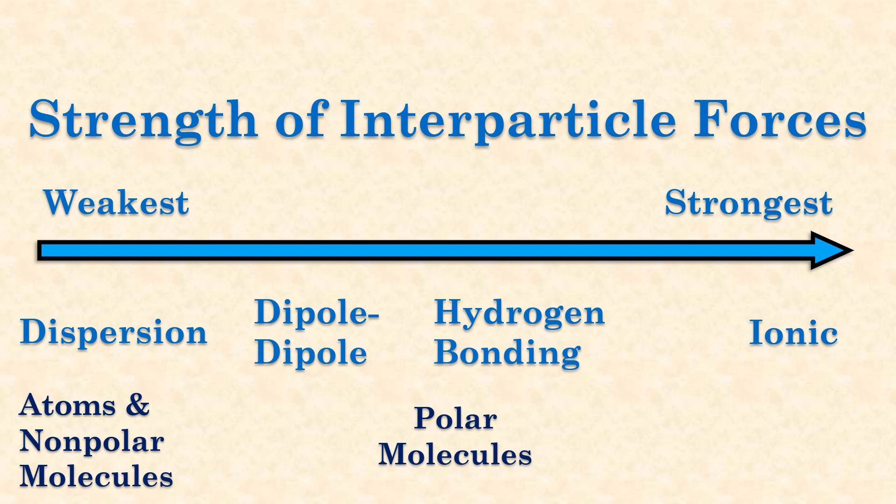Ionic bonding is the strongest type of interparticle force, because unlike the others, ionic bonding is bonding between charged particles called ions. Let's discuss further.